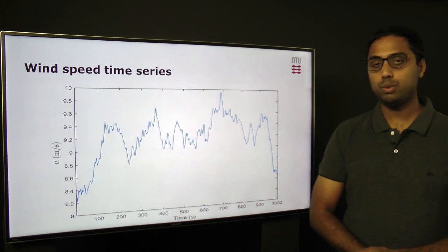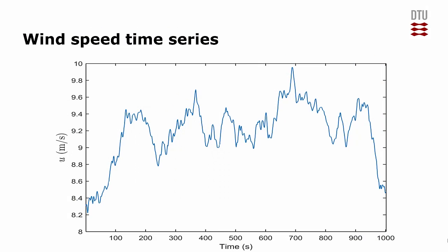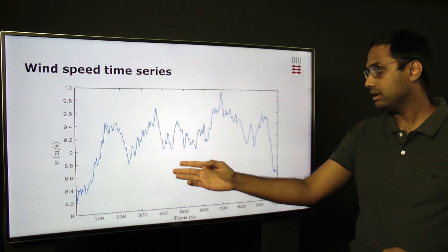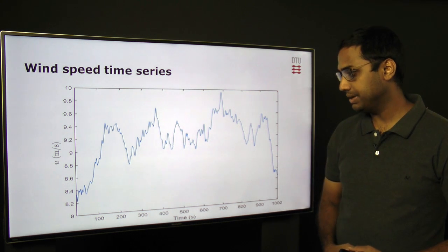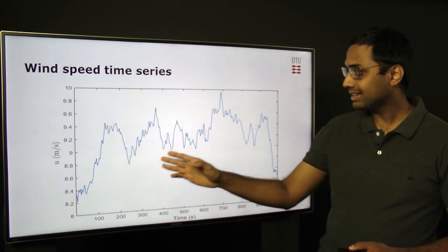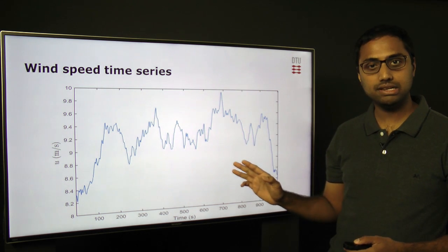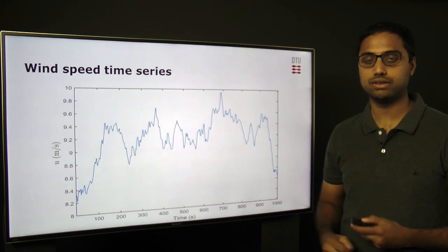This is how a typical wind speed time series looks. On the x-axis we have time in seconds going from zero to one thousand seconds; on the y-axis we have wind speed in meters per second. It is very clear that there are random variations of wind speed with time. Such a typical time series is what we get out of a cup anemometer or a sonic anemometer.